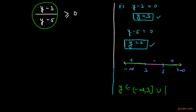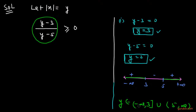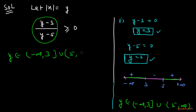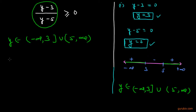The solution is y belongs to the interval negative infinity to 3, union with 5 to positive infinity. Note that 5 is not included because the inequality does not exist at y equals 5. So we can write: y is less than or equal to 3, or y is greater than 5.